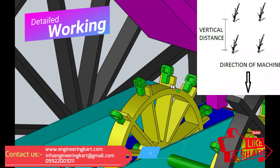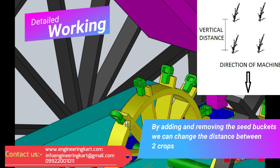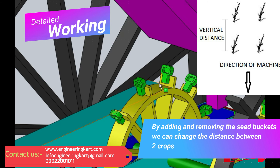The sand cover will cover the sand on seed and fertilizer. By adding and removing the seed carrying buckets, we can change the distance between two crops. The schematic diagram shows the vertical distance that we can change.